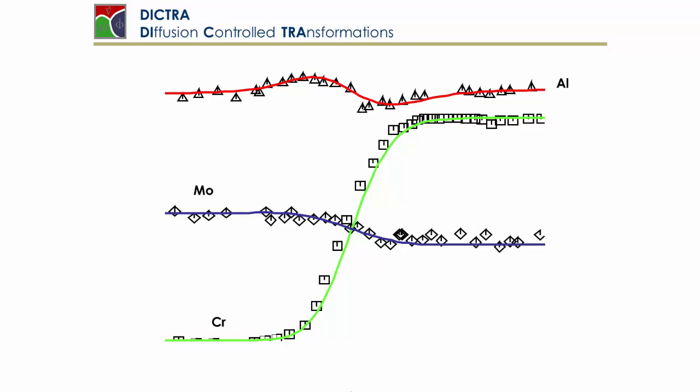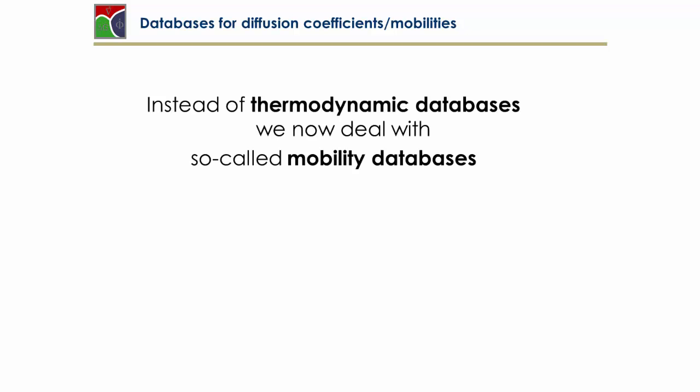There is a software tool called DICTRA which allows to describe diffusion controlled transformations. So in the same spirit as we learned from the thermodynamic databases, there are so-called mobility databases for the mobility of the individual elements in the different crystal lattices.